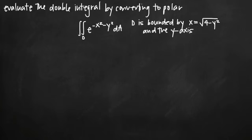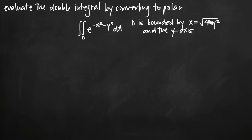Today we're going to be talking about how to evaluate a double integral by converting it to polar coordinates. In this particular problem we've been given the double integral of e to the negative x squared minus y squared, and we've been told that D, as indicated here, is the region we're taking the double integral over. In order to convert this to polar coordinates we're going to need to deal with a couple of different components of this double integral.